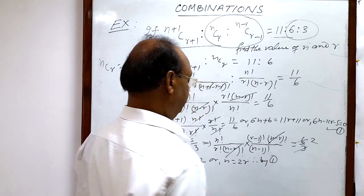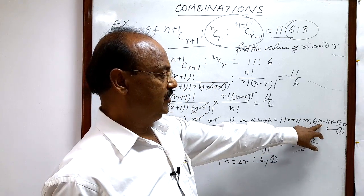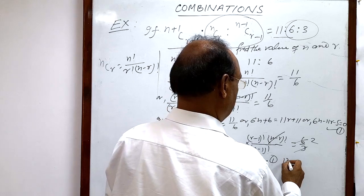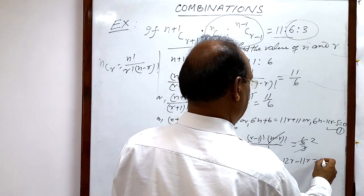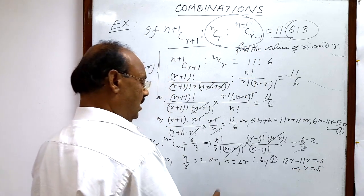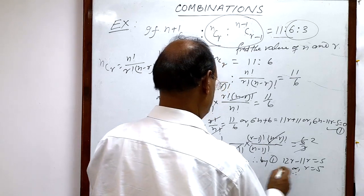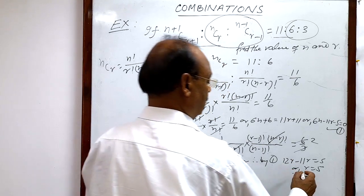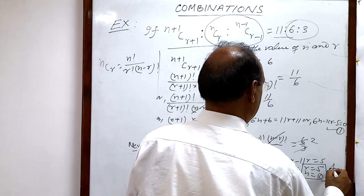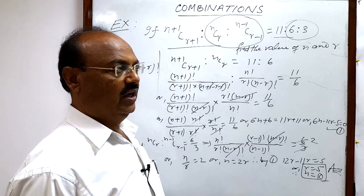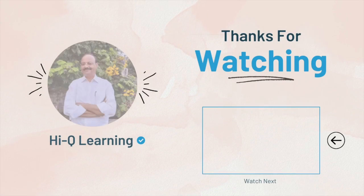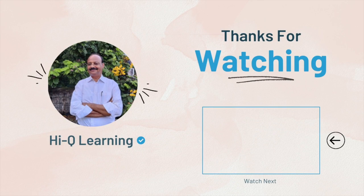Therefore, by relation 1, if we put n = 2r, we get 6 into 2r minus 11r equals 5, so 12r minus 11r equals 5, giving r = 5. Therefore n = 2 into 5, so n = 10. So the answer is r = 5 and n = 10. Very interesting and simple question!